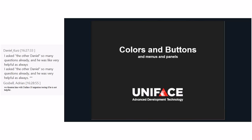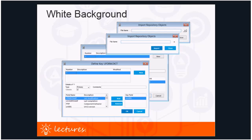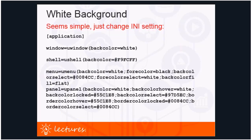Regarding colors, buttons, menus, and panels: the white background — here you can see the old version versus the new version, going from gray to white. I just got feedback from Christy that you cannot see my mouse moving, so I'll take that into account. To get this white background — it seems fairly simple — the goal is to make the background of all forms white.